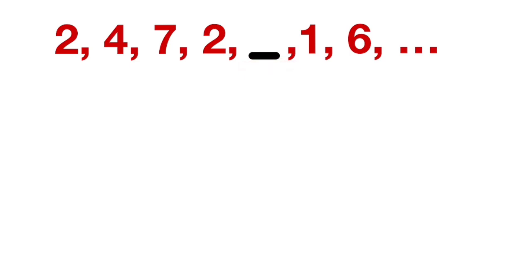So let us look at the first two terms. Here the difference is 2, right? 4 minus 2 is 2. Then 7 minus 4 is 3, and again 2 minus 7 is minus 5, and there is no relation between them. So this logic of difference doesn't work. Now let us find out some other logic.